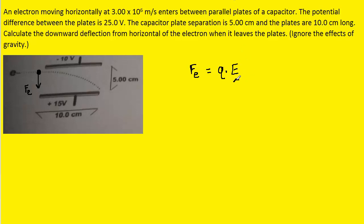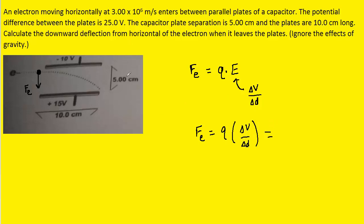We also know that electric field is equal to the potential difference divided by the plate separation. So we can replace E in the electric force equation with ΔV over Δd. The question gives us the value for ΔV, which is the potential difference between the plates — that's equal to 25 volts — and the plate separation is equal to 5 centimeters.